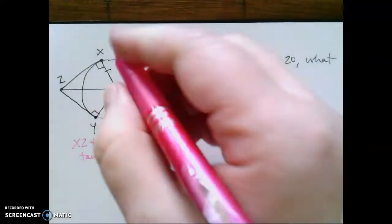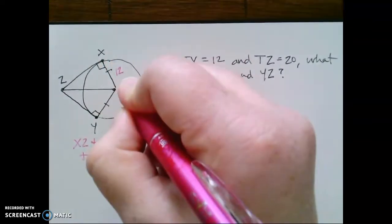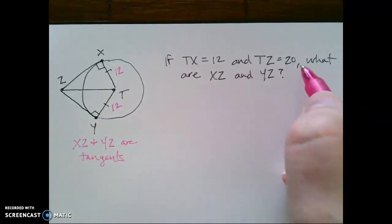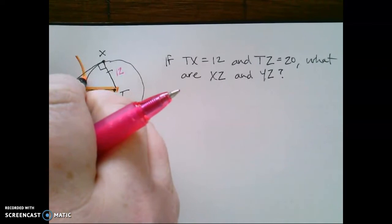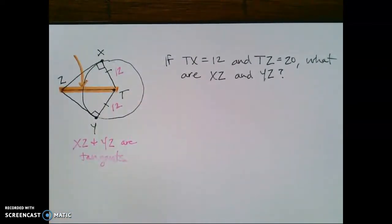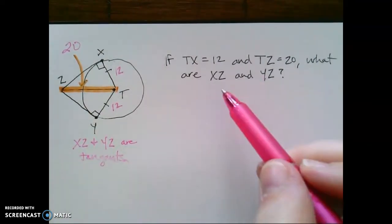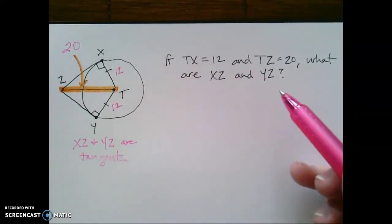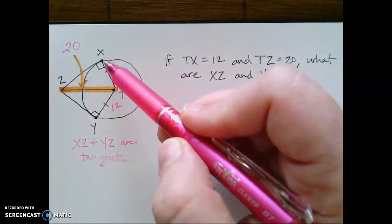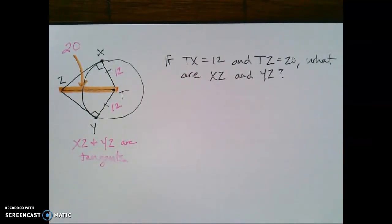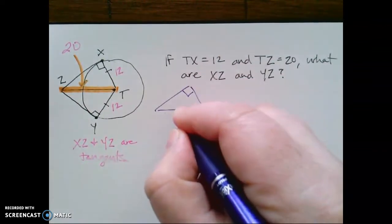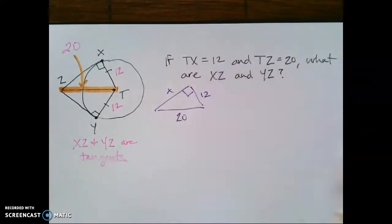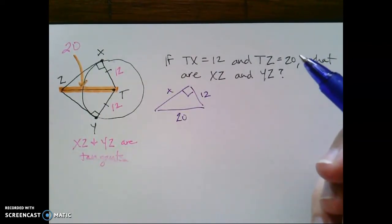Now, we're told if tx is 12, that would also make ty 12, and tz is 20. This entire length here, that entire length there is 20. How do I use that to find the length of xz and yz? Well, if we notice, I've got a right triangle. So I'm going to draw what I've got here. I know that this is 20. This is 12. This is my unknown. That means I do get to use the Pythagorean theorem.